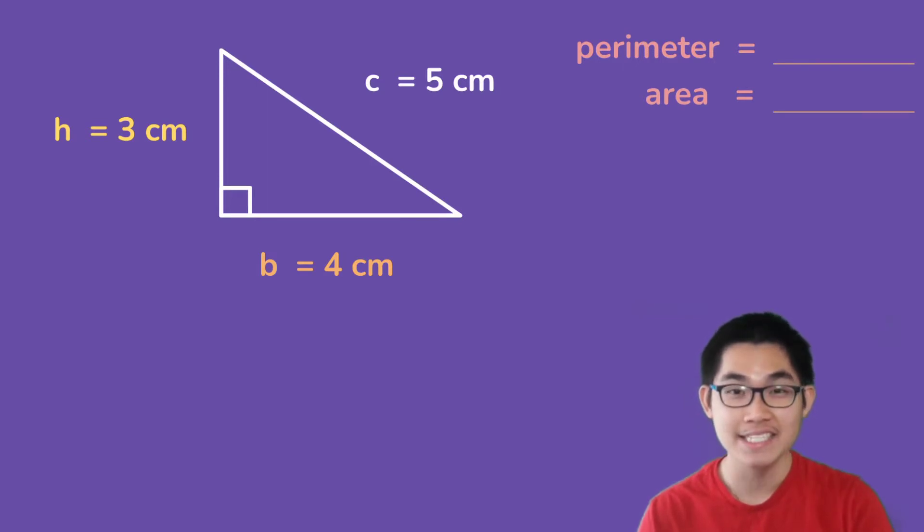As you can see it has three sides, three corners, and we know that the base is four centimeters, the height is three centimeters, and this side or we call it C is five centimeters.